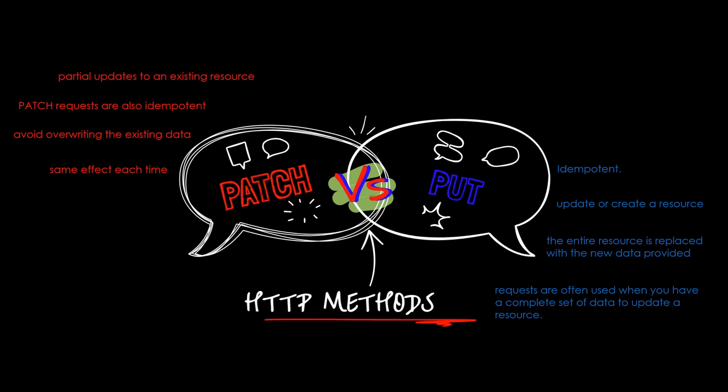The PATCH method is used to make partial updates to an existing resource. Unlike PUT, PATCH allows you to send only the changes or updates that need to be applied to the resource, rather than sending the entire resource. This is useful when you want to avoid overwriting existing data or when dealing with large resources. PATCH requests are also idempotent, meaning that sending the same PATCH request multiple times should have the same effect each time.